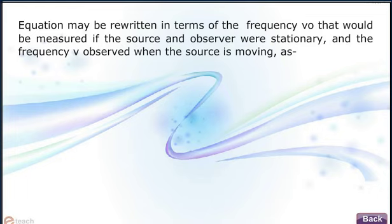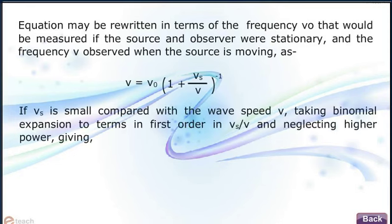If Vs is small compared with the wave speed v, taking binomial expansion to terms in first order in Vs by v and neglecting higher power, giving ν equals ν0(1 minus Vs by v).